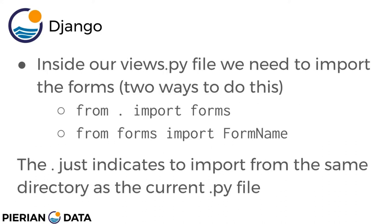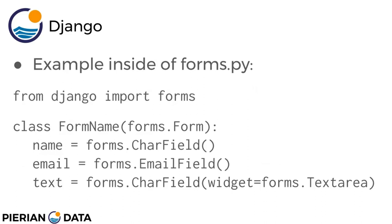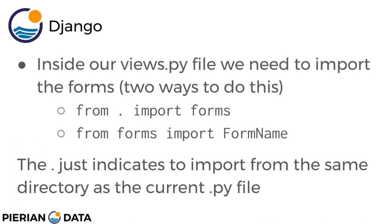Now that we have the form created inside the application's forms.py file, we need to show it using a view. Inside your views.py file we need to import the forms. There are two ways: you can say 'from . import forms' where the dot means look at the current directory, or you can explicitly say 'from forms import' and then the actual form name. Either method is fine.